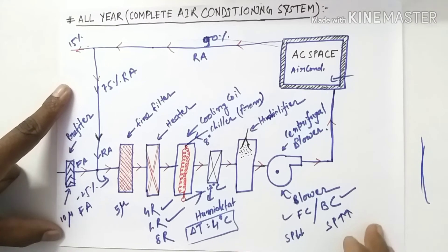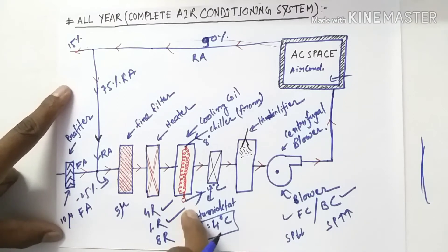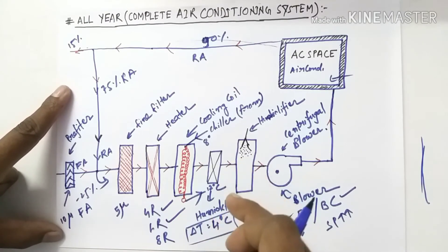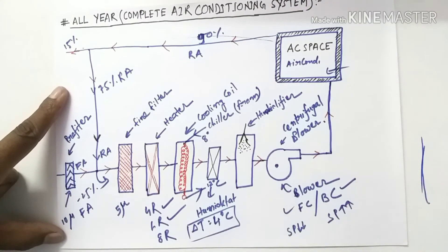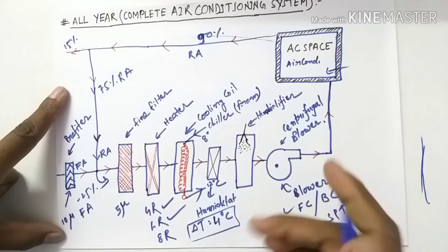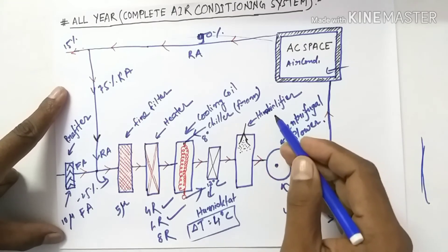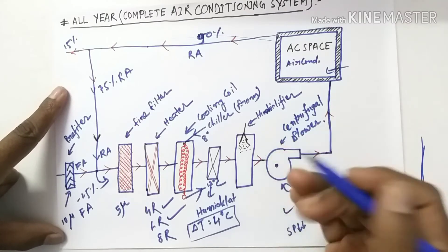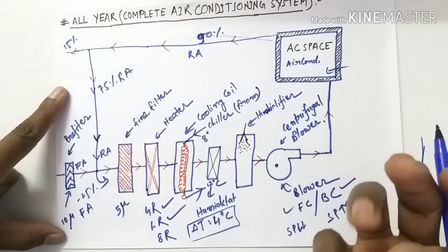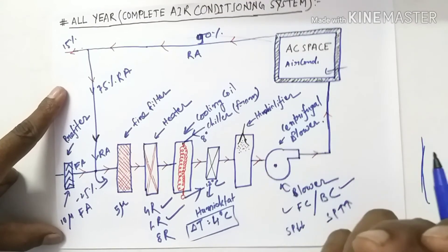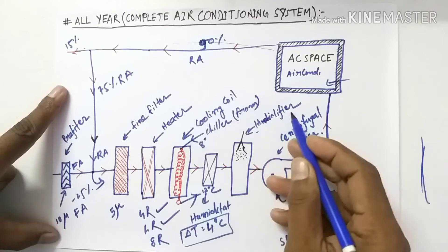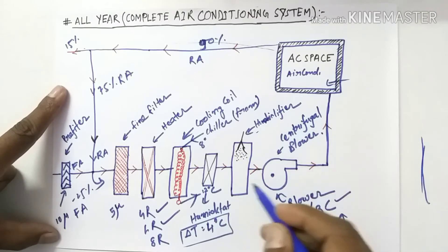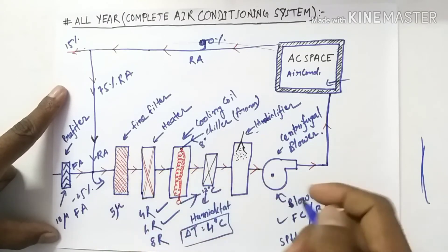After the cooling coil, this air passes through the humidistat. The humidistat controls the humidity of the air. Then we have the humidifier, which increases the amount of water per kilogram of air. Thereafter, this air is sucked into the blower.